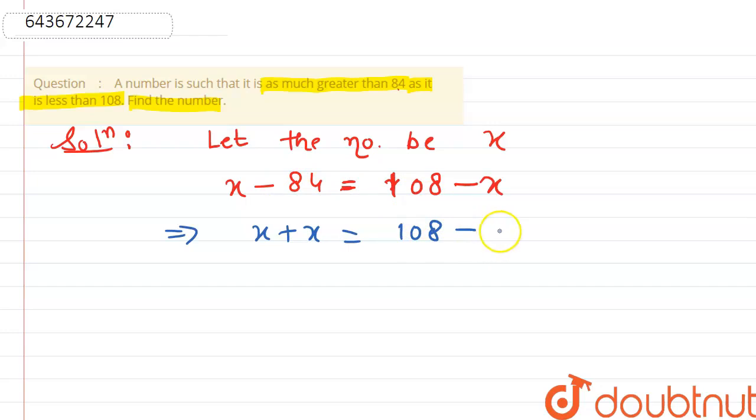Now here, x plus x we get 2x, and this equals 108 plus 84. This is equals to... 8 plus 4 is 12, 1 carry, 8, 9, 92... 192.